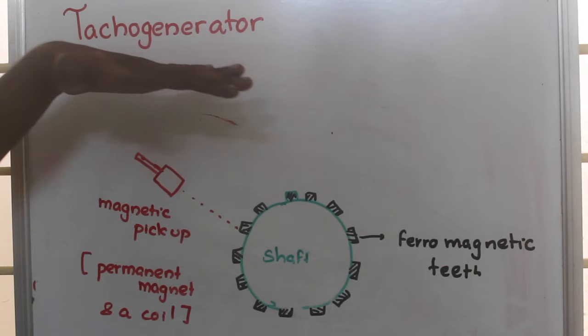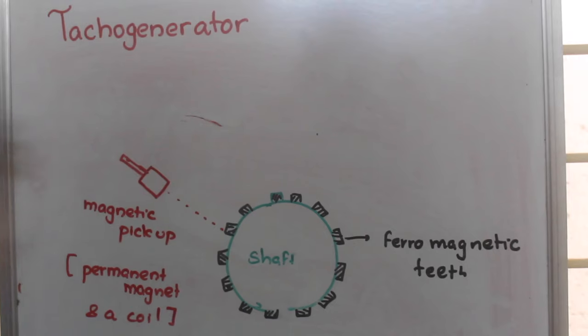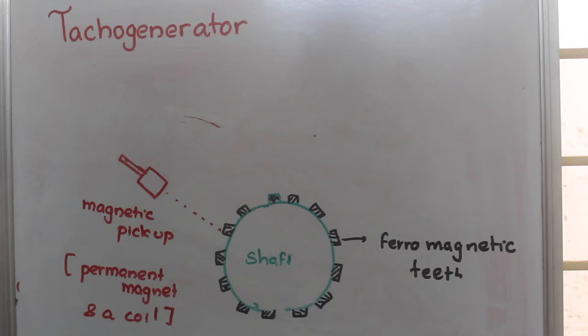Let's discuss tachogenerators. Tachogenerators are the same as tachometers. They are used to find the number of rotations or RPM of a particular shaft.